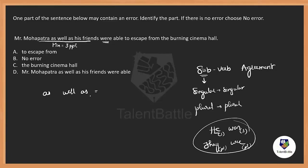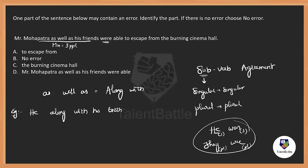Because here we have a terminology called 'as well as', which is exactly like 'along with', or 'in addition to'. So we have a condition to be considered. For example: 'He along with his brothers — the party.' Now tell me, is it 'attend the party' or 'attends the party'?